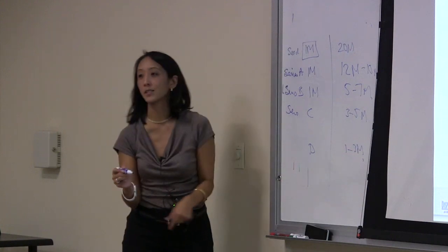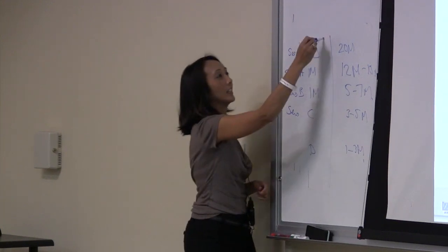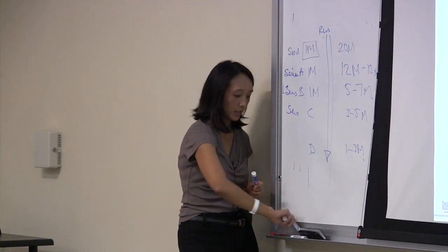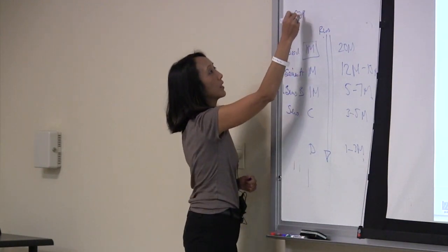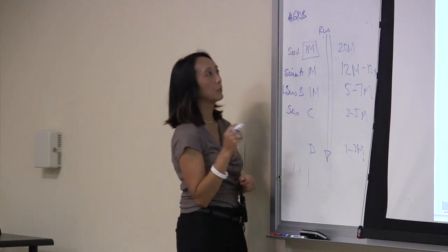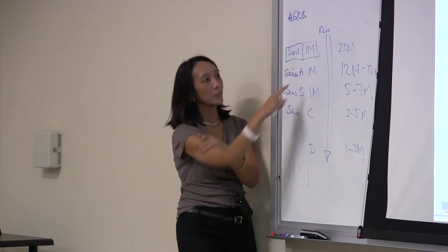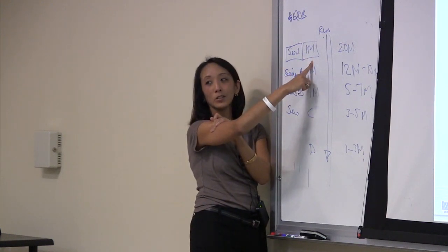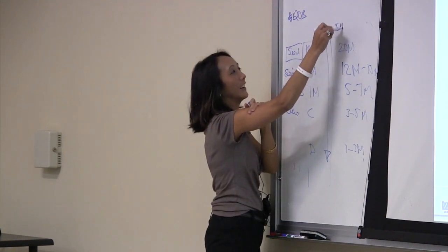As you go through Series A, B, and beyond, the risk of the company hopefully goes down. Back to market risk: let's say I want to make a $1 million investment in a company in a $20 billion market — if it works. Let's say I'm paying $1 million to get 20% of the company. What is the post-money valuation? $5 million — double E's usually can't do arithmetic, but anyway.